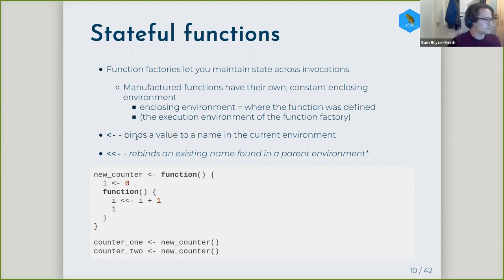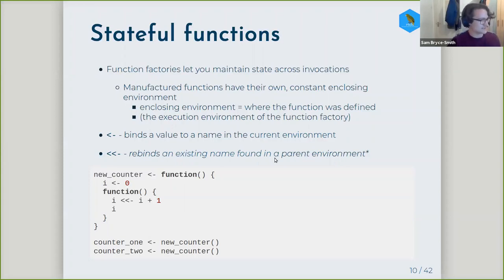Typically, if you were trying to bind a value to a name in the current environment, you'd use the standard assignment operator `<-`. But you can use the super assignment operator `<<-` — two less-than symbols and a dash — to rebind an existing name found in the parent environment. In the counter function example, in the execution environment of the factory you'd have zero bound to i, and your manufactured function would update the value of i in the parent environment of the manufactured function.